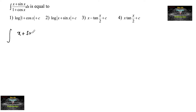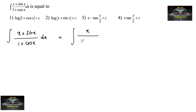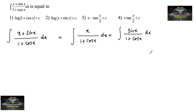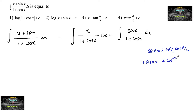We need to evaluate the integral of (x + sin x)/(1 + cos x) dx. We can split this into two parts: integral of x/(1 + cos x) dx plus integral of sin x/(1 + cos x) dx. We will use the identities: sin a = 2 sin(a/2) cos(a/2), and 1 + cos a = 2 cos²(a/2).